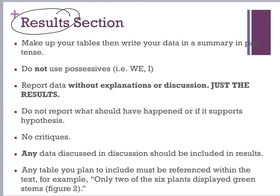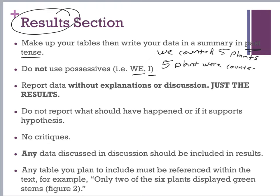Write your tables and figures in past tense. No possessives, no 'we', no 'I'. For example, instead of writing 'we counted five plants,' write 'five plants were counted.' Note that if you start a sentence with a number, write out the word. Don't explain your results in the results section — just write the results. No critiques of any kind. If you have figures, make sure you are citing them within your narrative as figure one, figure two, table one, table two.